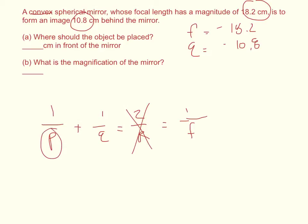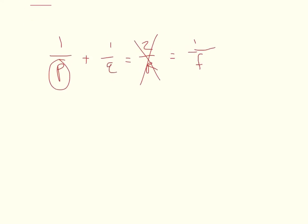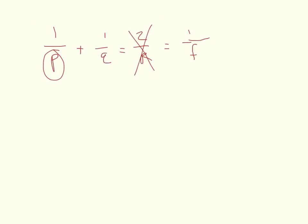This is where should the object be placed so we want to isolate the term with P in it. So we get 1 over P is equal to 1 over F minus 1 over Q.